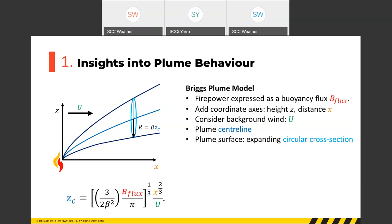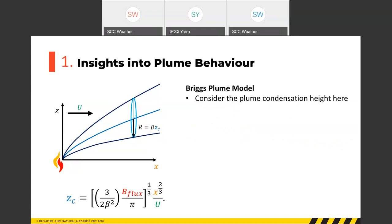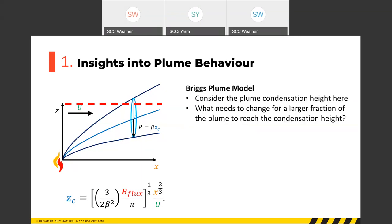The Briggs plume centreline equation has only two variables that change the shape of the plume — beta is constant and x is just a coordinate. The two terms that change the plume shape are the buoyancy flux (i.e., the heat or fire power) and the background wind speed. So if we consider the plume condensation level — the height the plume must reach for cloud to form — we need to increase fire power or reduce wind for a larger fraction of the plume to reach that condensation height.